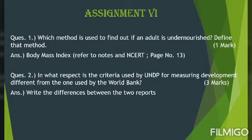Question number two: in what respect is the criteria used by UNDP for measuring development different from the one used by the World Bank? For this answer, write the differences between the two reports — World Development Report and Human Development Report. Remember, do not write the point about which organization issues which report, because that is already given in the question. Write the other points of differences.